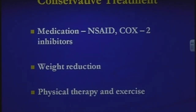Conservative treatment usually starts with medications such as non-steroidal anti-inflammatories — this includes Motrin and Aleve. The problem with these medications when taken chronically is that they can cause stomach ulcers and affect kidney function.